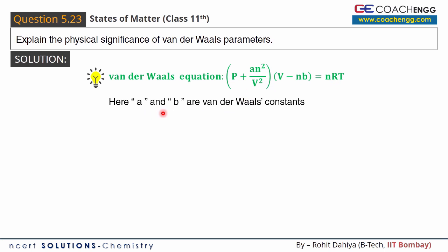So here A and B are the van der Waals parameters and we need to explain their significance. Now, first of all I will discuss the ideal gas equation which states PV is equal to nRT. In the ideal gas equation, we have some assumptions.